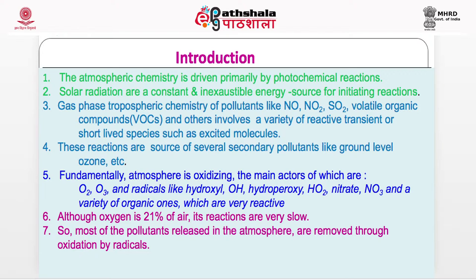Gas-phase tropospheric chemistry of pollutants like NO, NO2, SO2, volatile organic compounds and others involves a variety of transient or short-lived species such as excited molecules. These reactions are sources of several secondary pollutants like ground-level ozone.